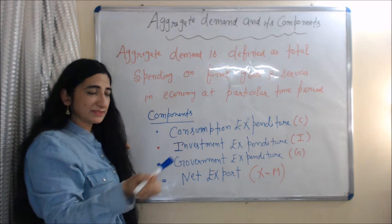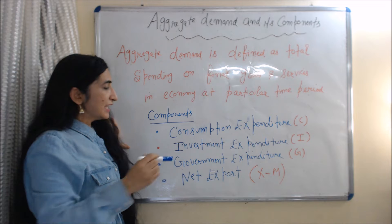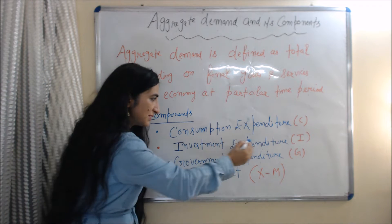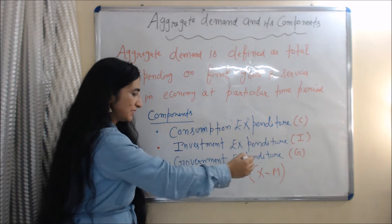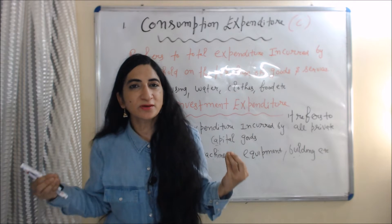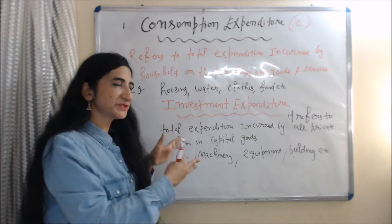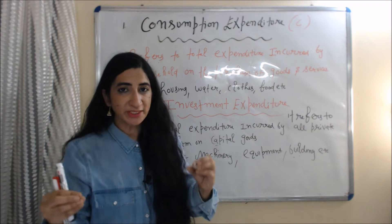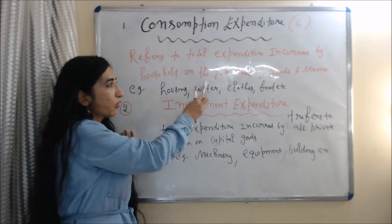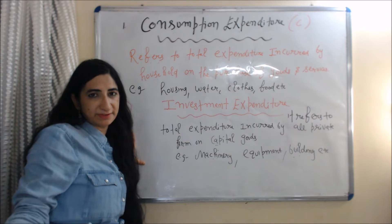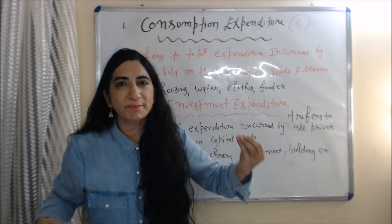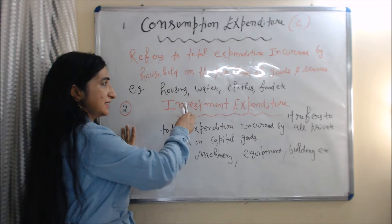Aggregate demand has four components: consumption expenditure, investment expenditure, government expenditure, and net export. Let's discuss each component one by one. The first component is consumption expenditure, which refers to total expenditure incurred by households on the purchase of goods and services.